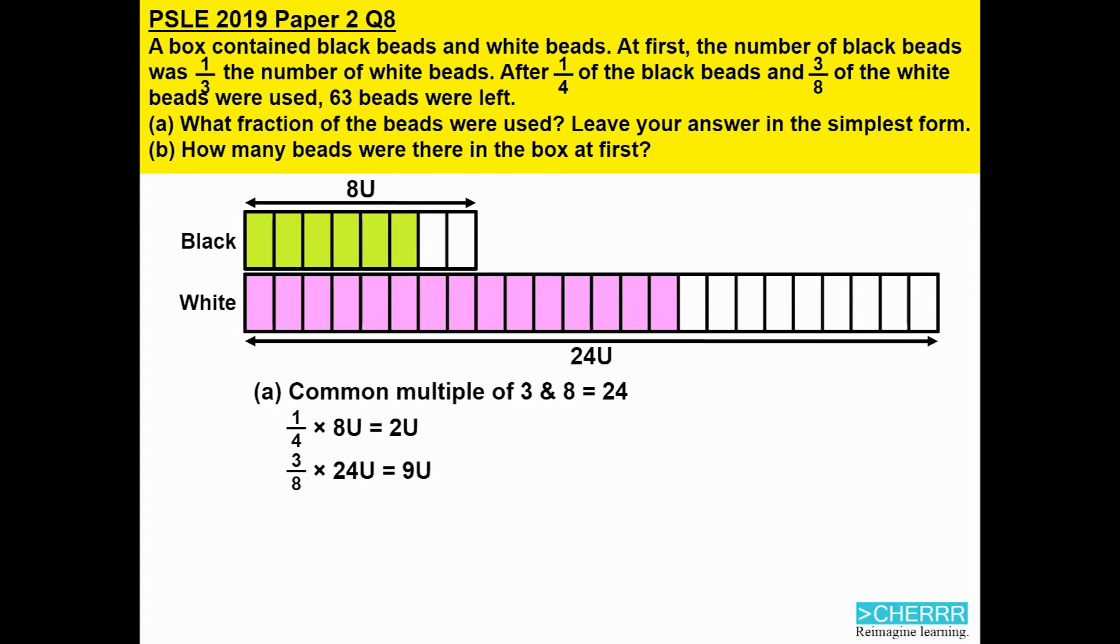We want to know the fraction of the beads that were used. So we have two units plus nine units, that will get us 11 units, out of a total of eight plus 24, which is 32 units.